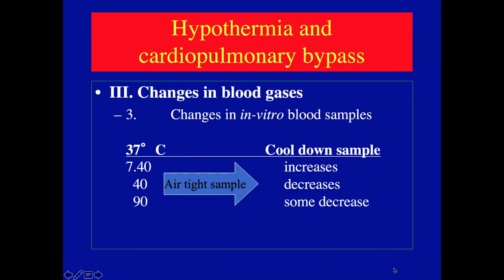If you take a normal blood gas at 37 degrees — pH 7.4, pCO2 of 40, and a pO2 of 90 — and put that sample in an airtight container and cool it down, the pH will increase, the pCO2 will decrease, and the partial pressure of oxygen will also decrease.